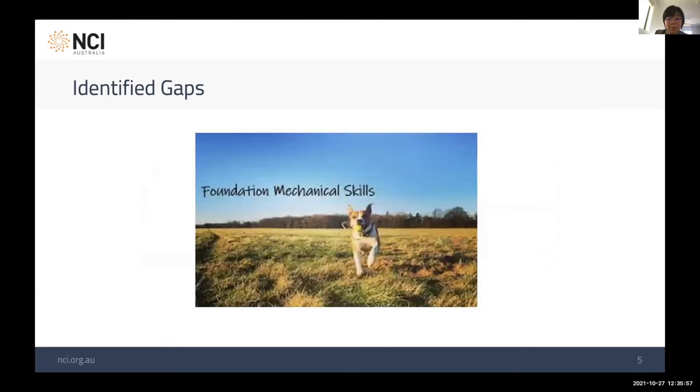The second gap we identified is the missing fundamental computational skills in many science domain students. If we look at university curriculum, programming, command line, and parallel computing are not offered as formal requirements in graduate programs, but people need it. They have to learn by themselves or attend courses that NCI, PAWSEY, or Intersect offer.